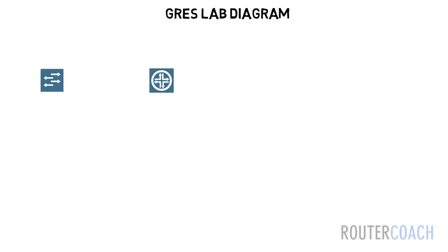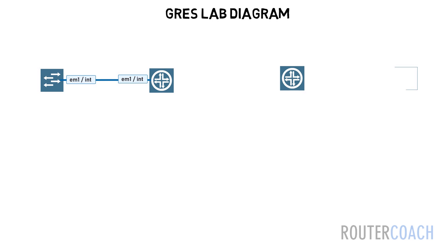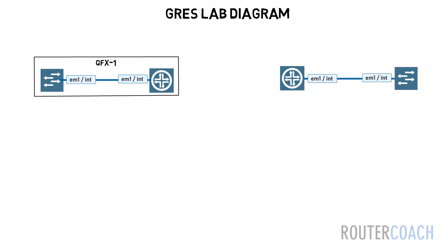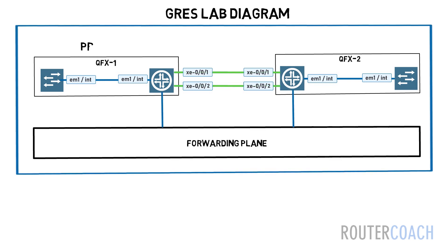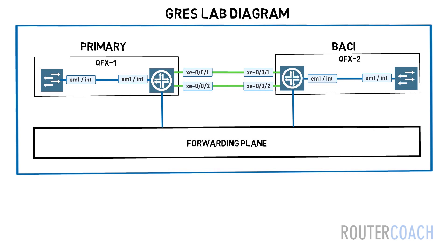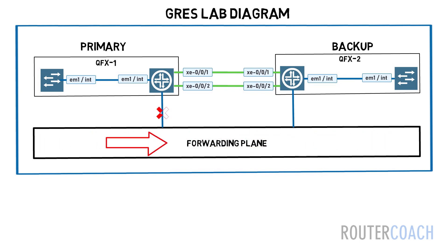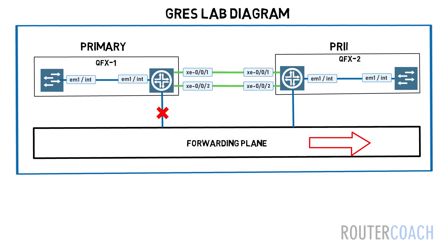This feature enables a virtual chassis stack to continue forwarding packets so that the traffic is not interrupted, even if one of the routing engines fails. If the backup routing engine does not receive a keepalive from the master routing engine after two seconds, it determines that the master routing engine has failed and takes over.